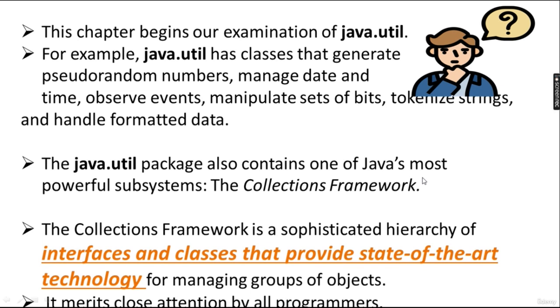In today's session we are going to see the new chapter — the Collection Framework. So far we have completed 15 chapters; this is the 16th chapter. We will start with java.util. In the previous session we saw the java.lang package; here we see the java.util package, which has classes that generate random numbers, manage date and time, observe events, manipulate sets of bits, tokenize strings, and handle formatted data.